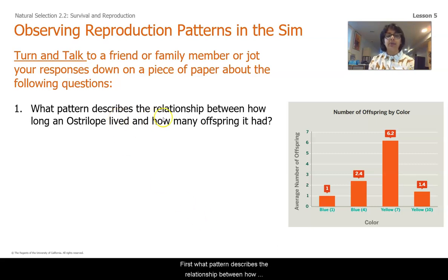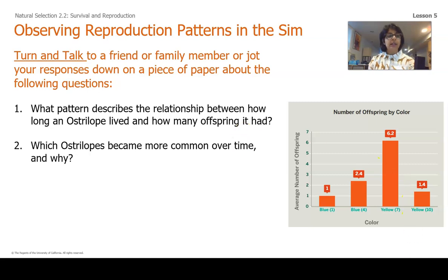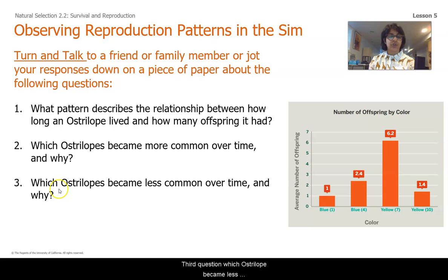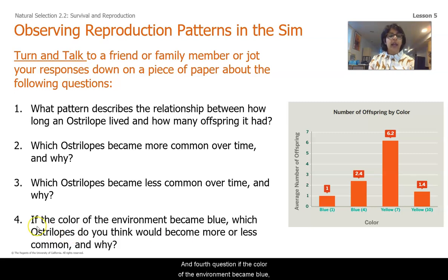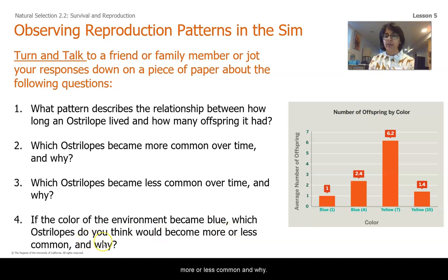First, what pattern describes the relationship between how long an Ostrilope lived and how many offspring it had? Second, which Ostrilopes became more common over time and why? Third, which Ostrilopes became less common over time and why? And fourth, if the color of the environment became blue, which Ostrilopes do you think would become more or less common and why?